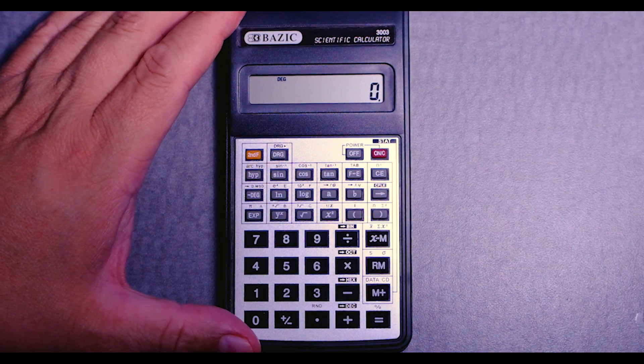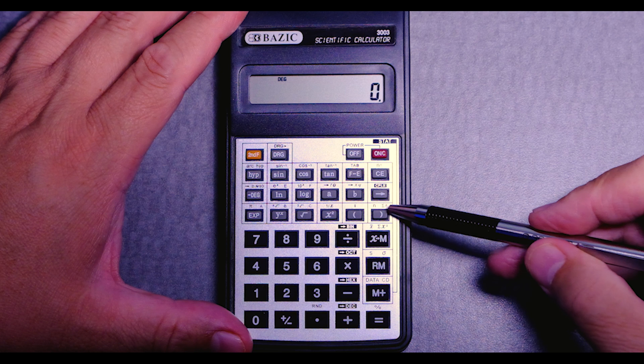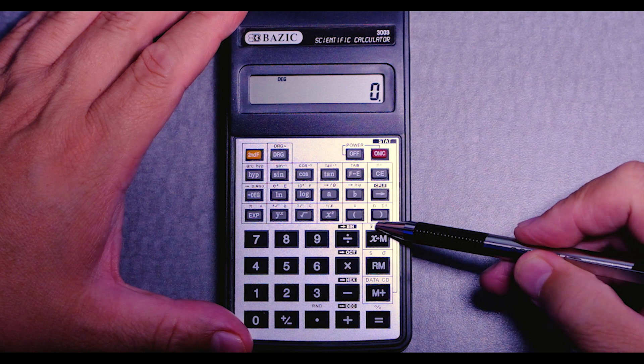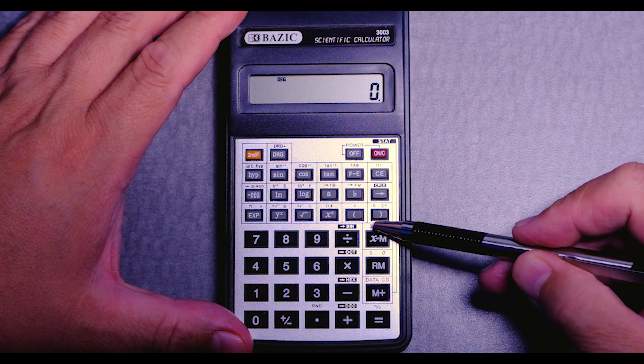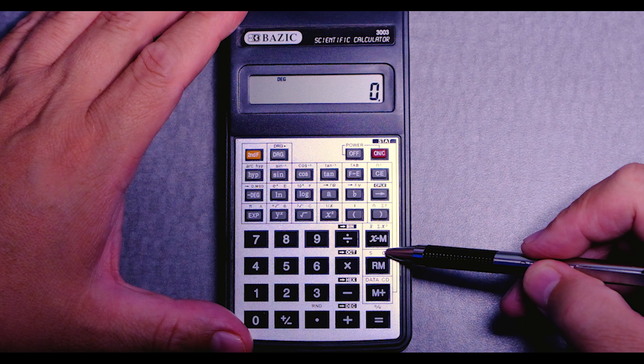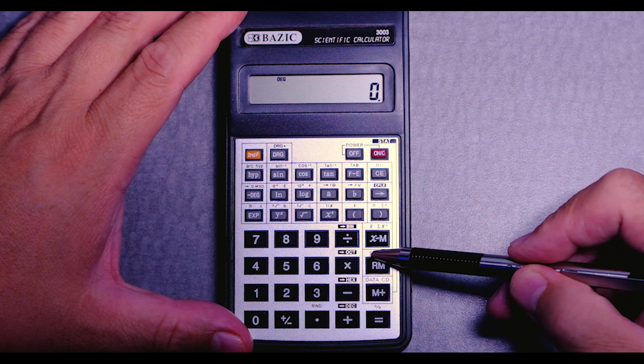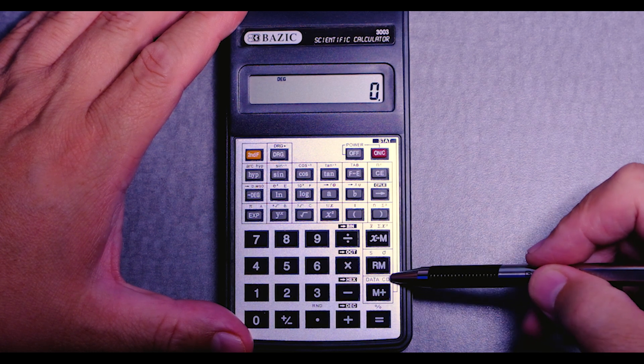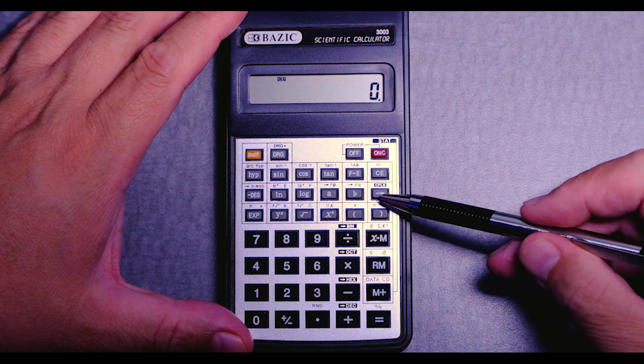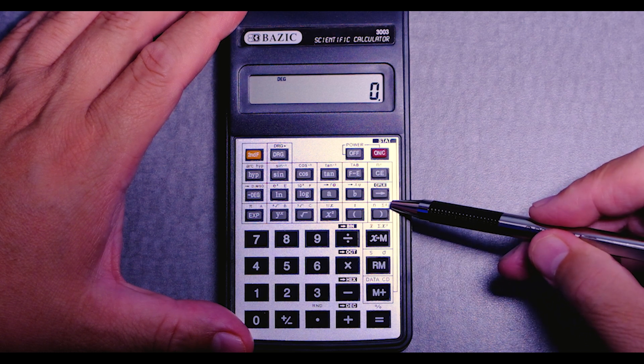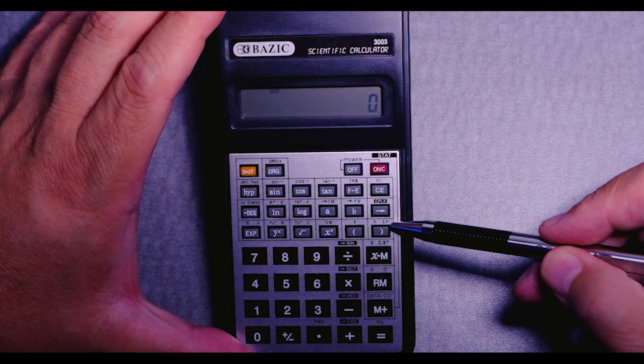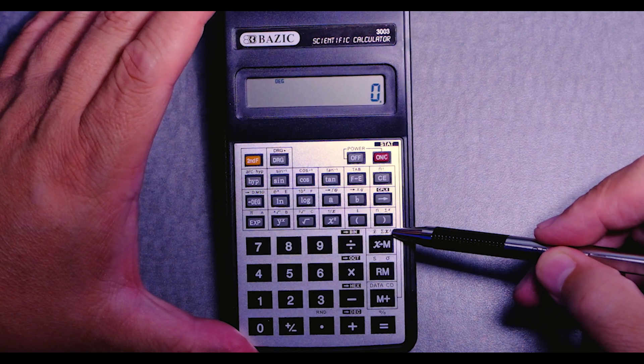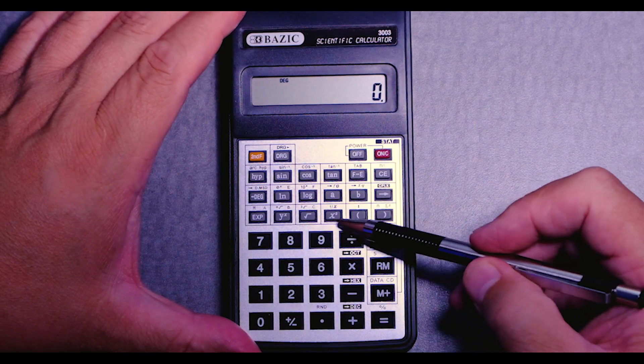It looks like we can do statistics. We got the x bar and sigma, population standard deviation, standard deviation, some data. Some data. I'm not sure what CD might mean. N. It looks like the sum of x, sum of x squared. Okay, that's nice.